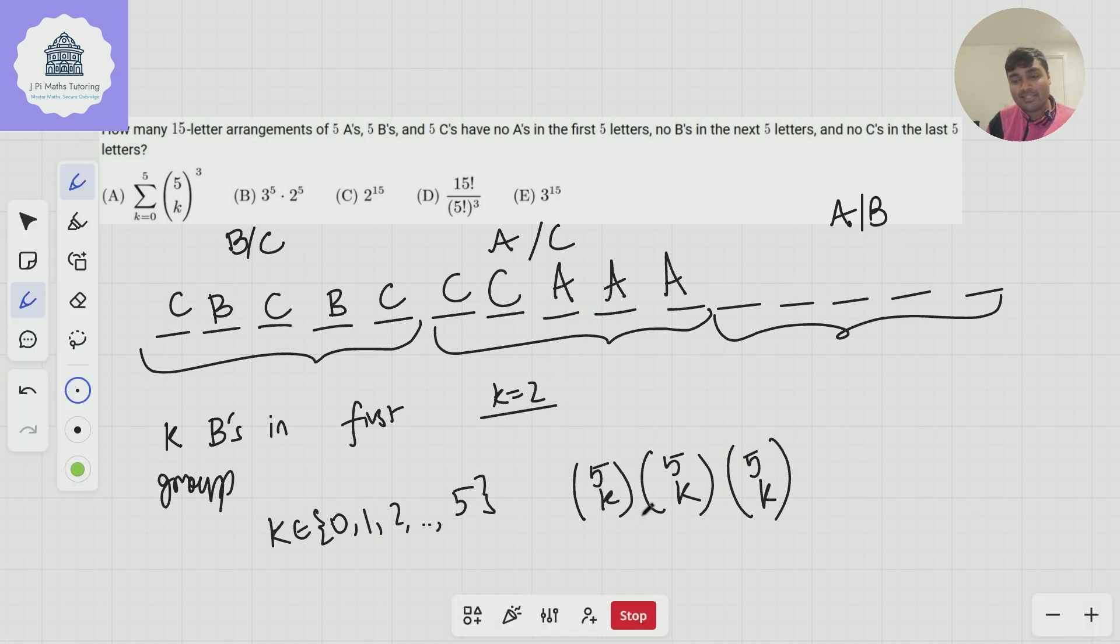And so the answer is 5 choose K times 5 choose K times 5 choose K. That's if K is two or whatever the value of K is. So we need to sum this over all possible values of K, and that gives us option A as our answer.